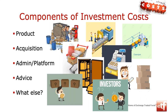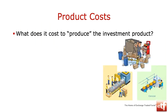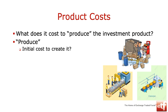Let's get into our production costs - what is involved in actually creating an investment product? I'm going to use as an example one of the most common things we're familiar with, and that is a unit trust or a CIS. When we talk about producing an investment product, there are two components: the initial cost to create it, and the ongoing costs.